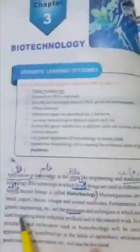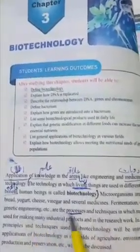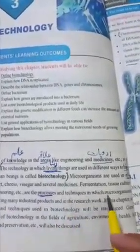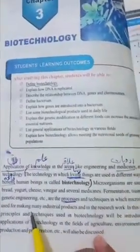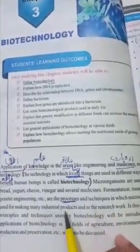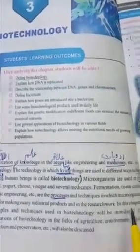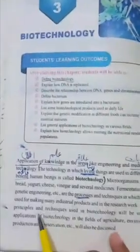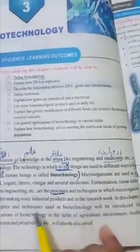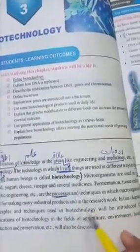Fermentation, tissue culture and genetic engineering, etc. are the processes and techniques in which microorganisms are used for making many industrial products and in research work. Is chapter mein hum kuch principles aur techniques ko introduce karenge jin mein biotechnology use ki jati hai.